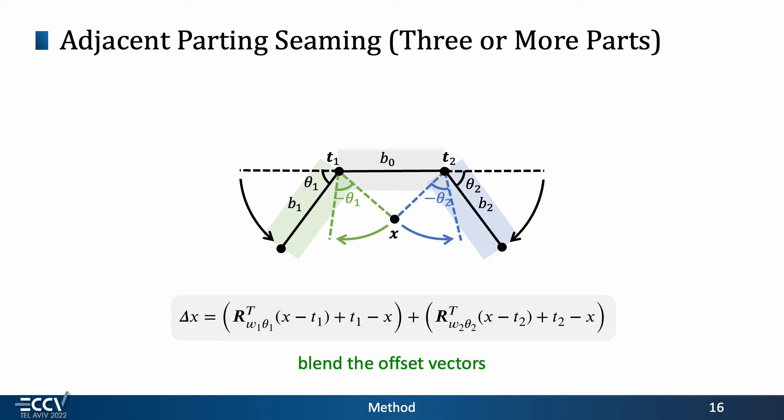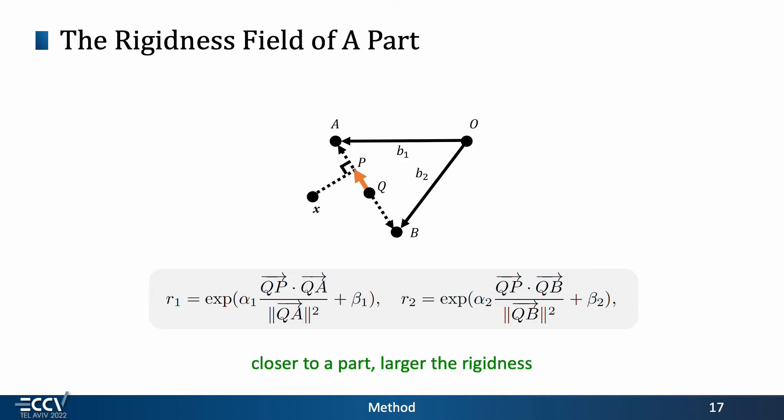Then, how do we obtain the blending weight omega? We first define a rigidness field of a part regarding each adjacent part. Intuitively, rigidness increases when a point is closer to a part. Alpha and beta are learnable parameters.